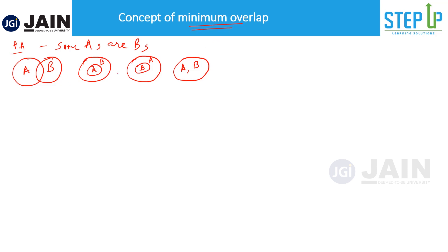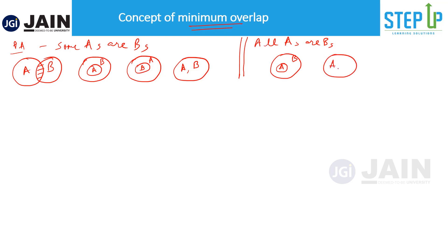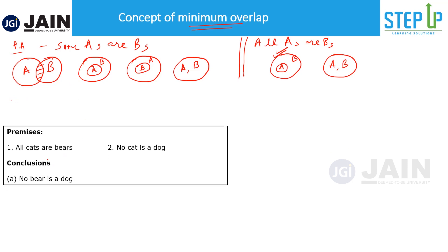Now these are all possibilities, but when we talk about the concept of minimum overlap, we ask: where is the minimum overlap? For 'all A's are B's', the possible cases include A inside B, or A equals B, but this is the minimum overlap case. When solving problems, we should draw only one diagram so it doesn't become very cumbersome.